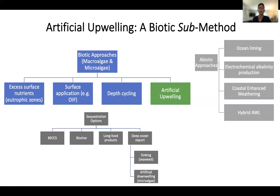Enhanced production is the first of two required parts of the story. Newly fixed organic matter must be sequestered on long timescales in order to prevent its return to the atmosphere and allow the ocean to take up additional carbon dioxide. I want the audience to keep in mind that artificial upwelling without reliable sequestration pathways is unlikely to yield sustained carbon dioxide removal.